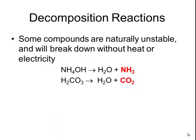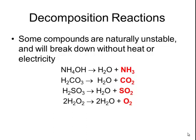Carbonic acid is also unstable and will break down into water and carbon dioxide, so anytime carbonic acid is formed, it will spontaneously break down to release carbon dioxide gas. Sulfurous acid is also unstable and will break down into water and sulfur dioxide. Finally, hydrogen peroxide is naturally unstable and will break down into water and oxygen gas. Notice that each of these four compounds will break down into water and a characteristic gas, depending on the elements present in the original compound.